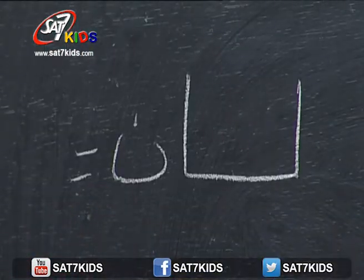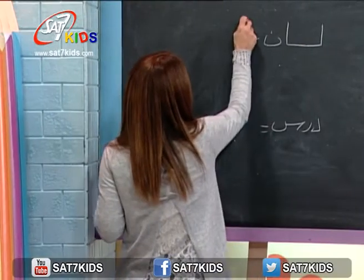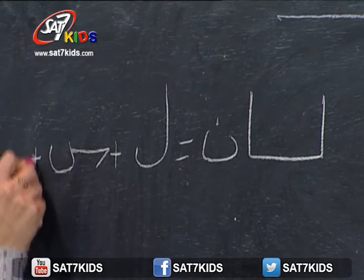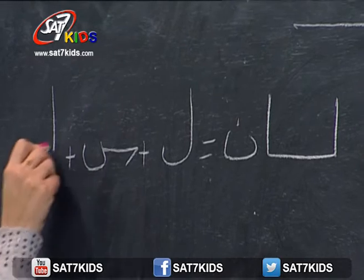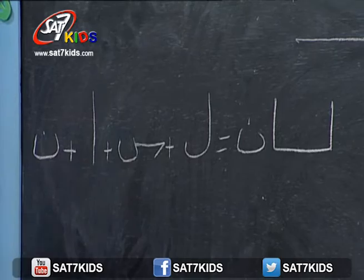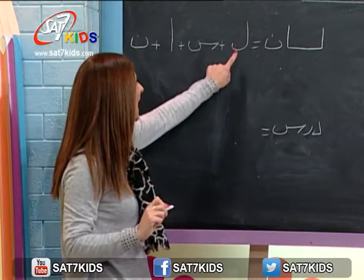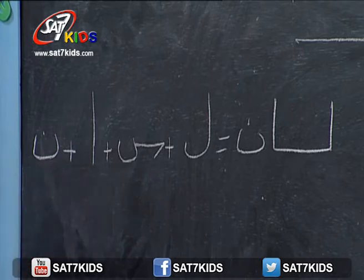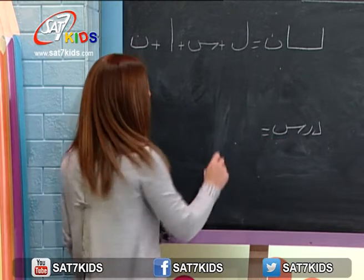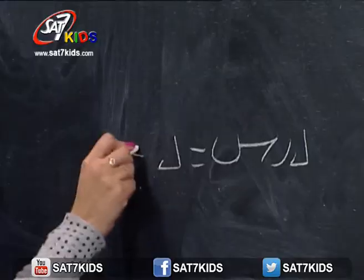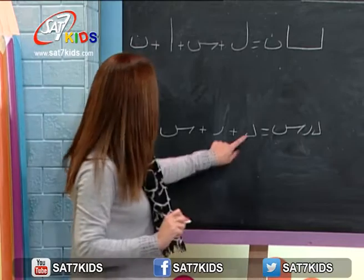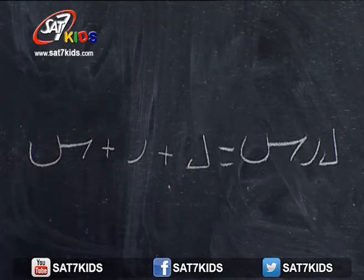عندي هون كلمة لسان. تنشوف كلمة لسان من كم حرف مألفة؟ أول حرف اللام، زائد تاني حرف السين، زائد تالت حرف الألف، زائد آخر حرف النون. كلمة لسان مؤلفة من أربع أحرف. وآخر كلمة: درسة. درسة مؤلفة من دال زائد راء زائد سين، يعني من ثلاثة أحرف.